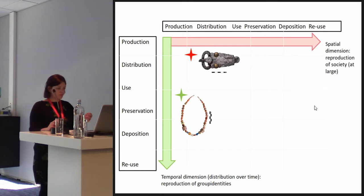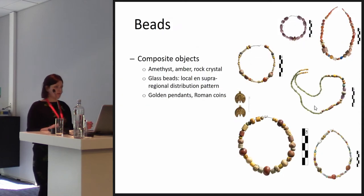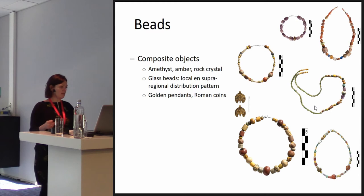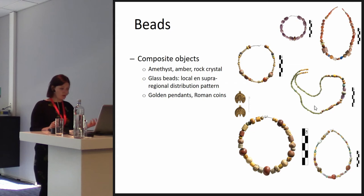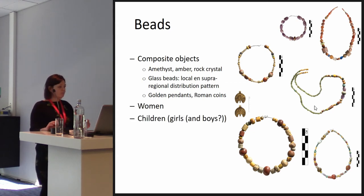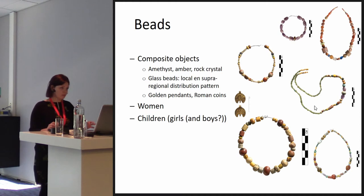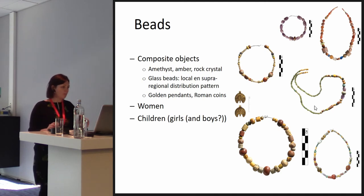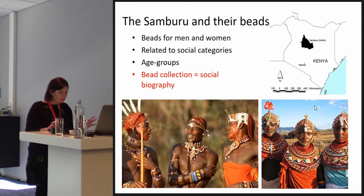I want to show the belt fittings and strings of beads as examples. First, the beads: they have special characteristics. They are composite objects consisting of different sorts of beads — amethyst, amber, rock crystal, glass beads — produced locally or from further away, and they can include golden pendants or altered Roman coins. They are predominantly found in the graves of women, but also in children's graves, and for these children we cannot say if they were girls or boys — it is very possible they include boys.